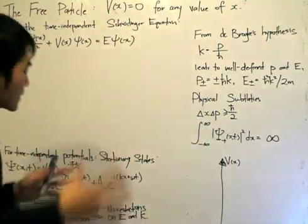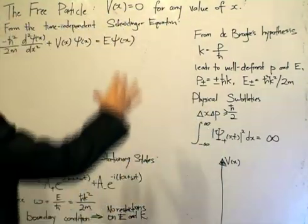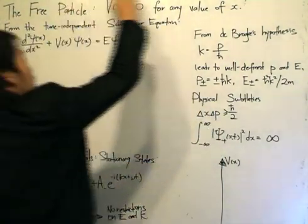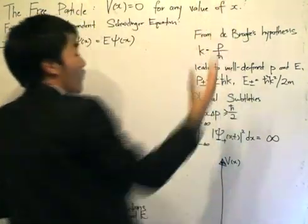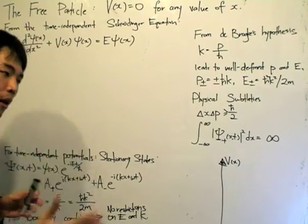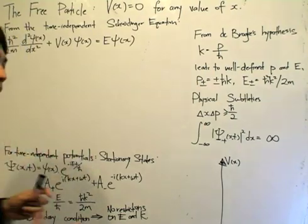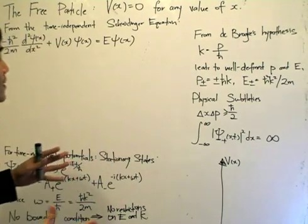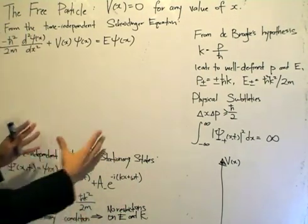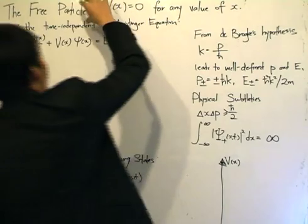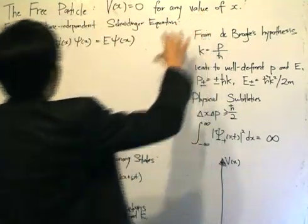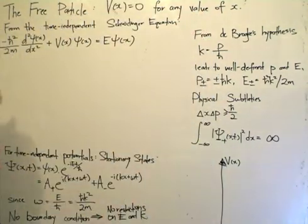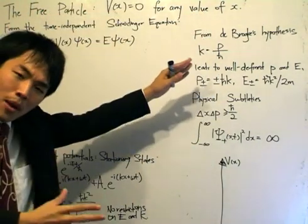The free particle is really defined by the potential being zero for any value of x. We talked about a particle being in a certain potential, but the free particle says there is no potential. So when that happens, we go to the time-independent Schrödinger equation.